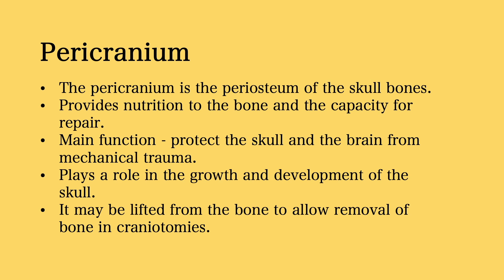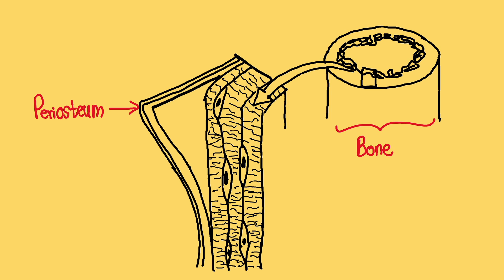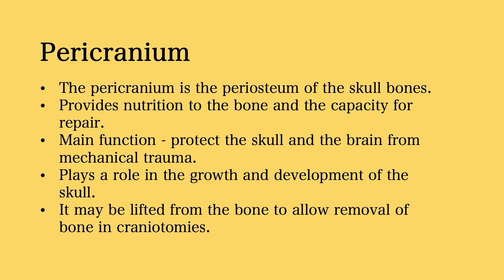The fifth layer of the scalp is the pericranium. The pericranium is the specific name used to refer to the periosteum of the skull bones. The periosteum is a sheath found outside the bones that supplies them with blood vessels, nerves, and cells that help them to grow and heal. Therefore, the pericranium provides nutrition to the skull bones and the capacity for repair.